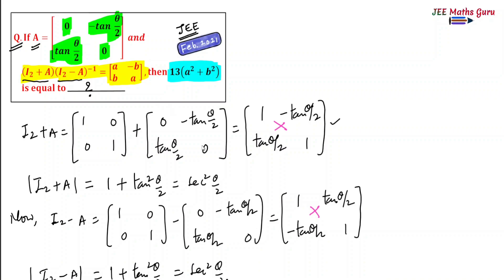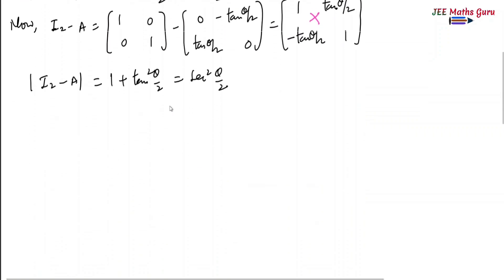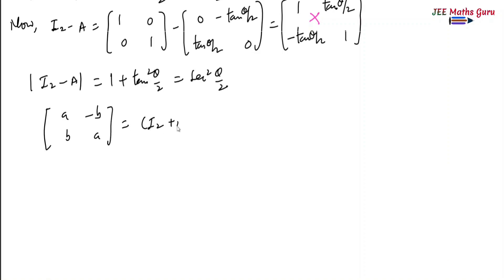Now, B is defined as (I₂ + A)(I₂ − A)⁻¹. So I will write A minus B over A, and this is equal to (I₂ + A) into (I₂ − A)⁻¹.